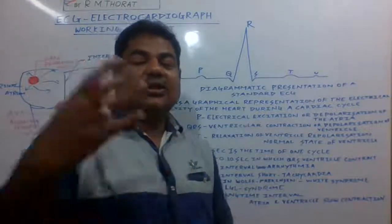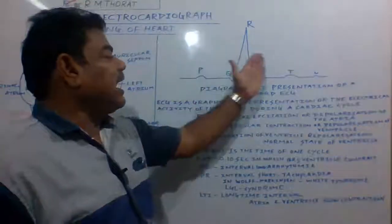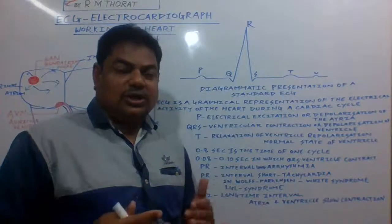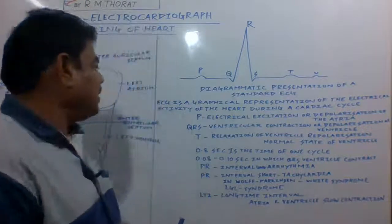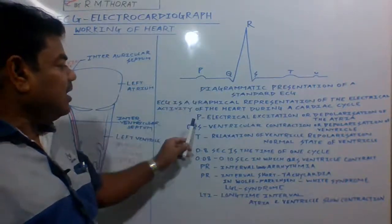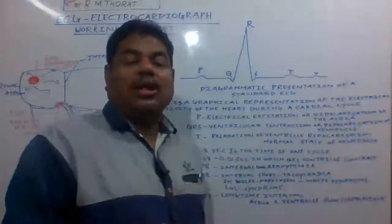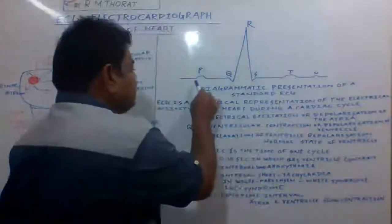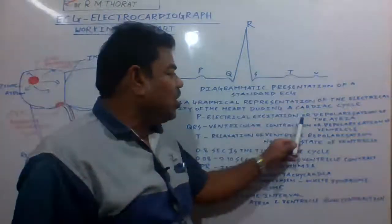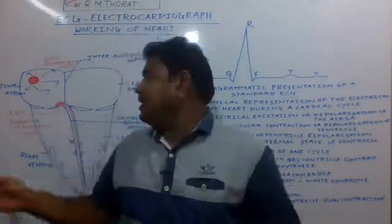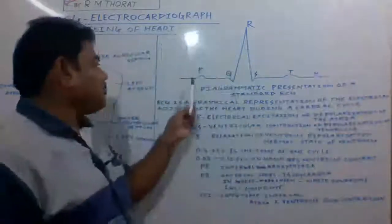ECG represents the electrical activity of the heart during contraction and relaxation — the cardiac cycle. This is very important for heart patients to understand how the heart is functioning. The P wave indicates electrical excitation, or depolarization, of the atria — when the SA node emits the electrical impulse, both auricles contract, and the graph plots a P wave like this.